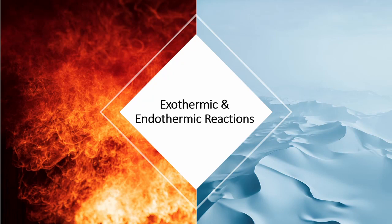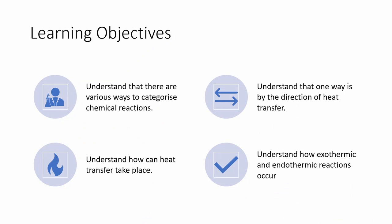In today's video, we'll be talking about exothermic and endothermic reactions. By the end of today's video, you should understand that there are many ways to categorize chemical reactions, one of these ways is by the direction of heat transfer. You should also understand how heat transfer can take place, and what exactly exothermic and endothermic reactions are.